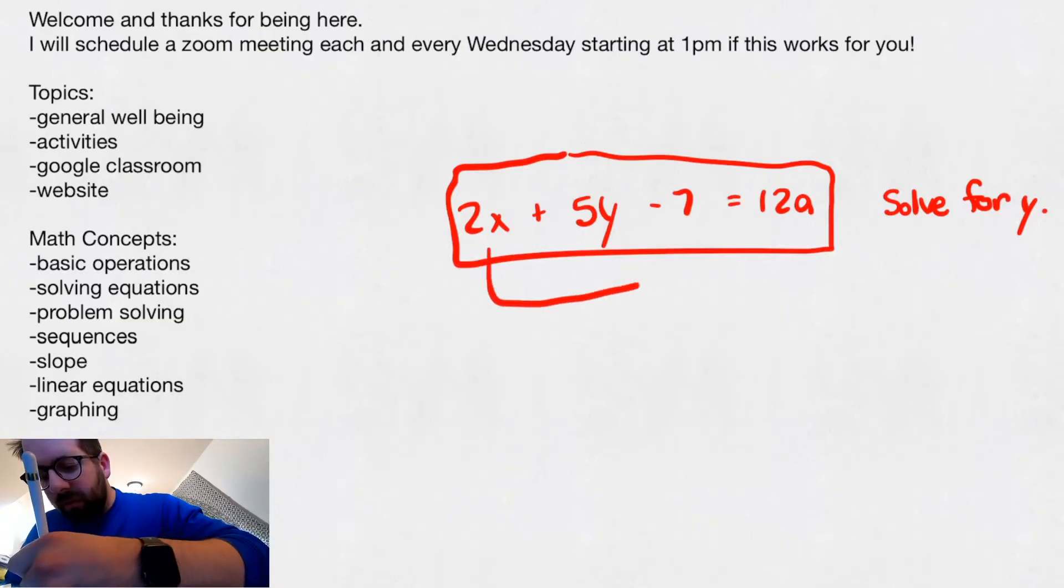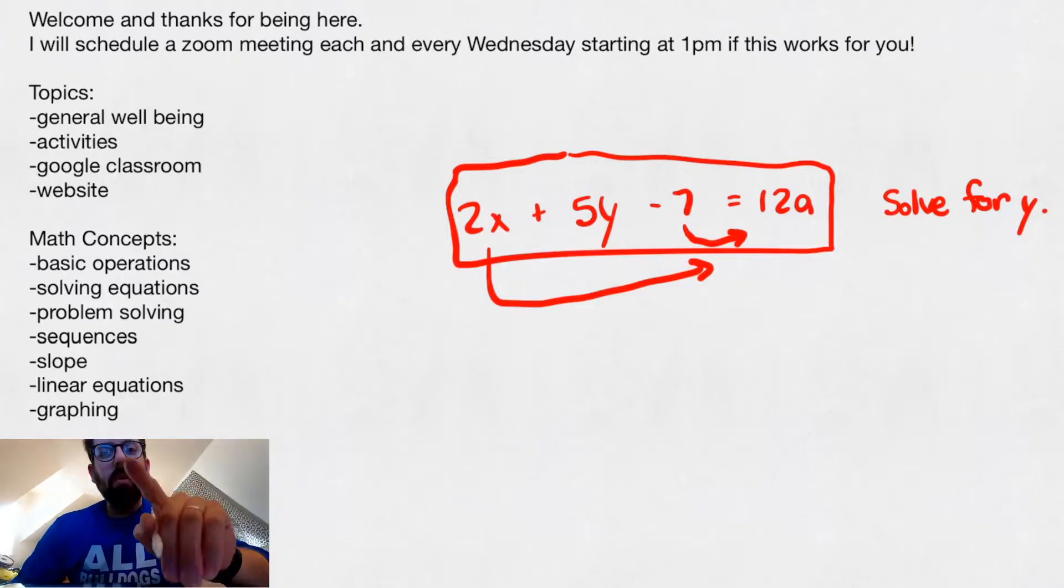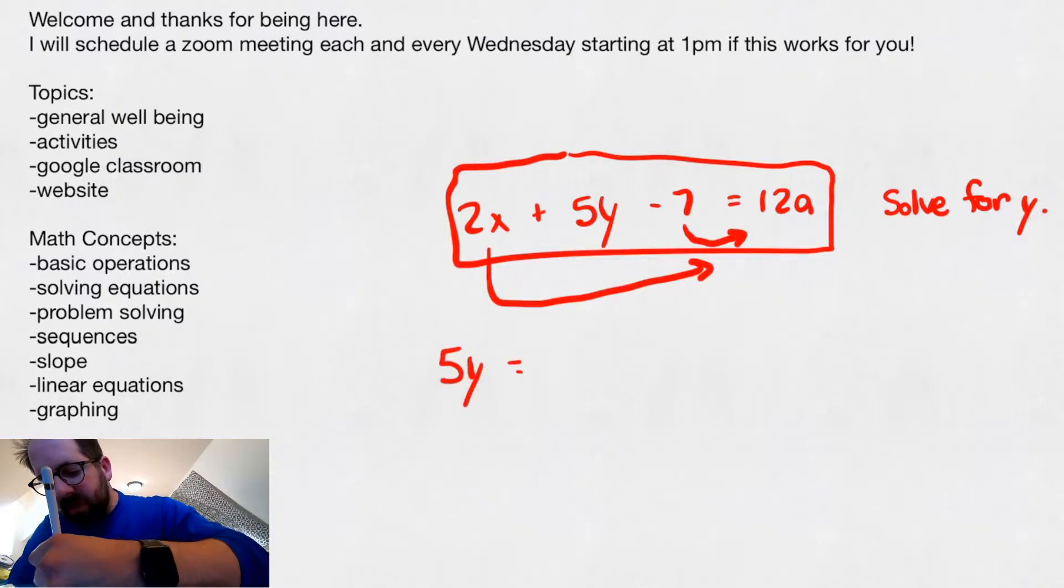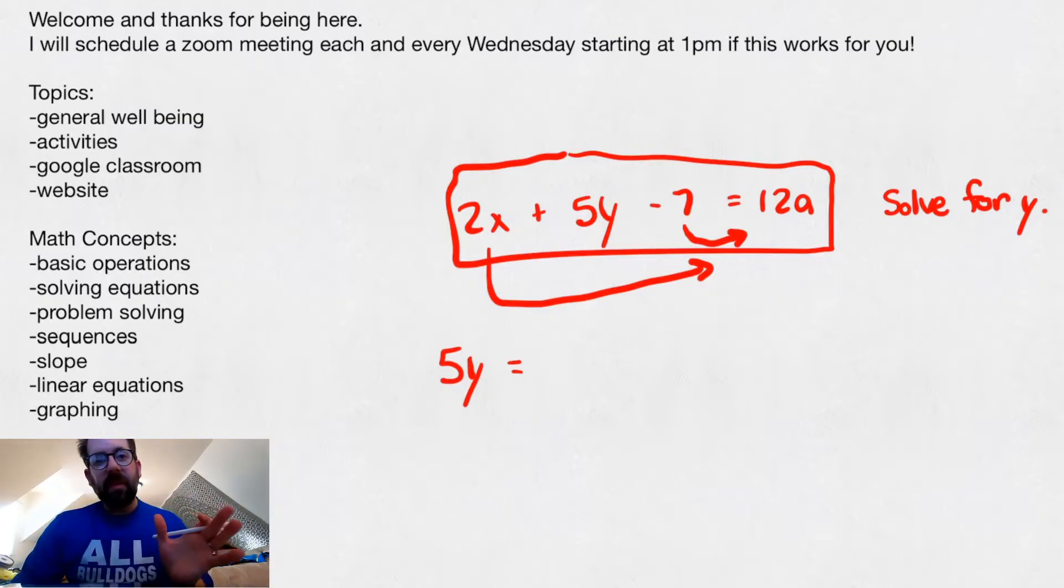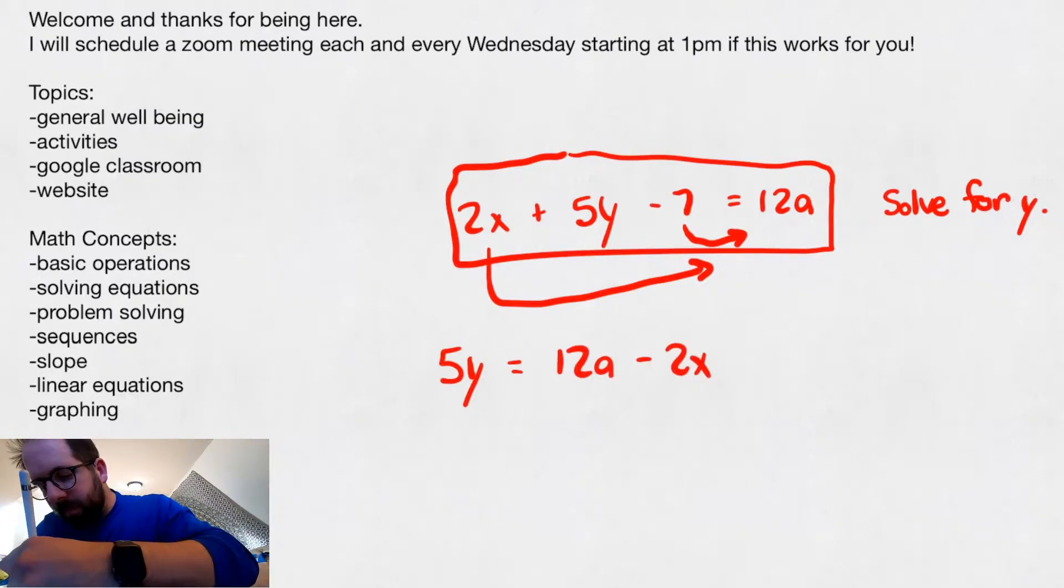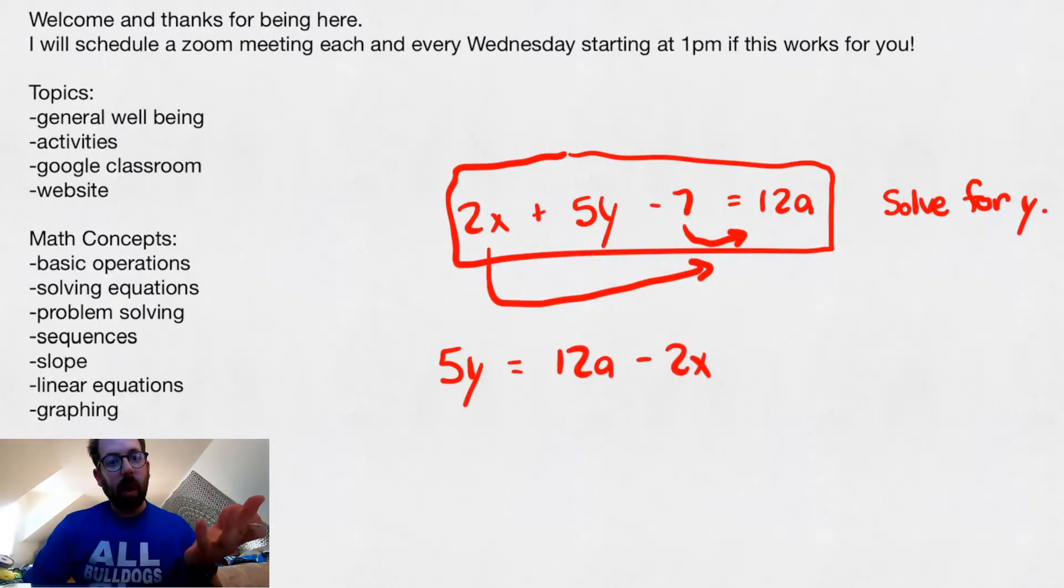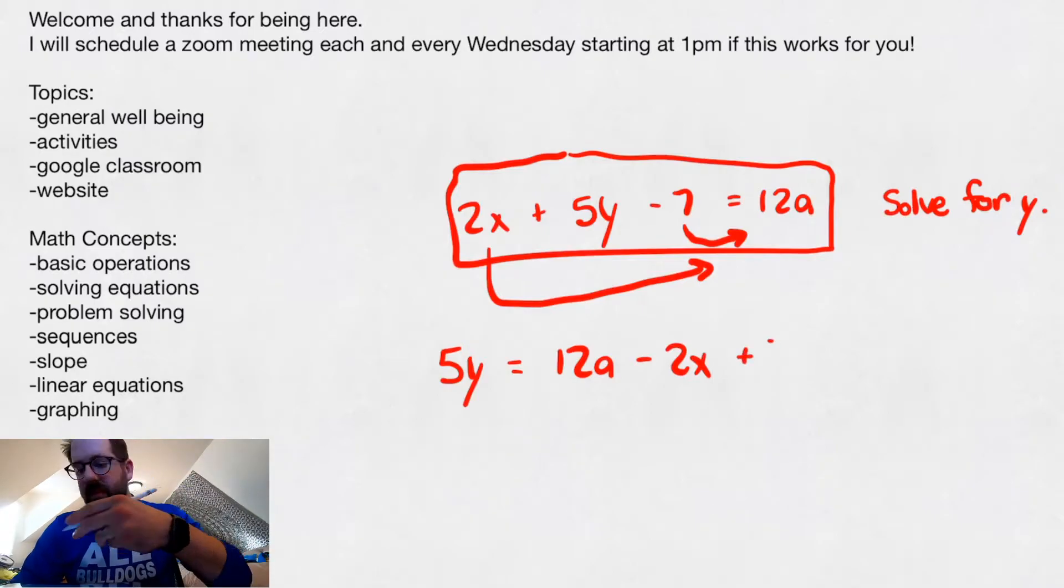So if I move everything over, I'm going to move this 2x over, I'm going to move this negative 7 over. When you move them across, you're going to either add or subtract them. You're going to do the opposite operation, that's called an inverse operation, to the other side. So the 5y is going to stay where it's at, but everything else is going to the right side. We're going to be subtracting the 2x over, it doesn't have a y on it, and we're going to add the 7 across.